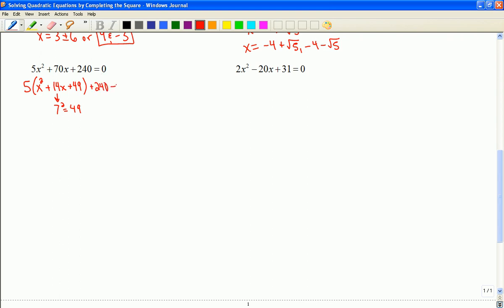But I have to subtract what I've just added. And what I've added is 5 times 49. So I'm going to subtract 5 times 49. So if I try to collect up like terms here, I would end up with this equation now.